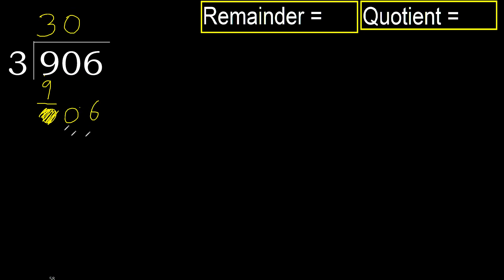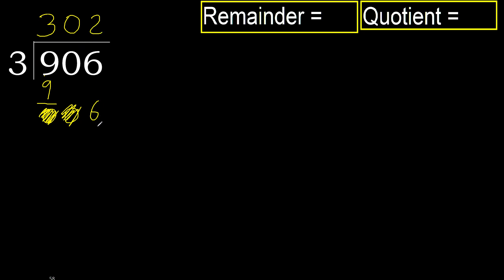Eliminate 0, bring down 6. 3 multiplied by 3 is 9, which is greater. Multiply by 2: 6 is not greater. Subtract, then next — there is no remaining number, therefore finish.